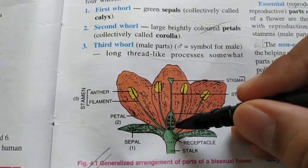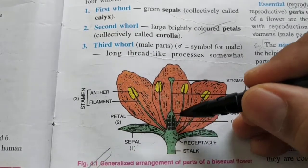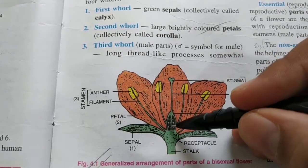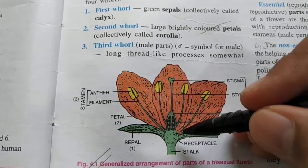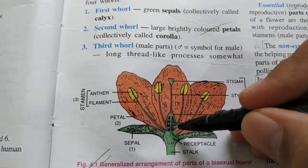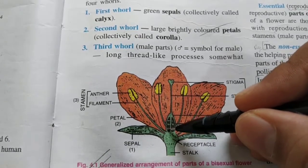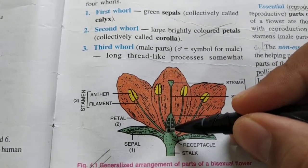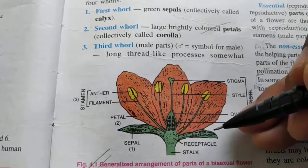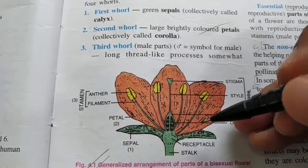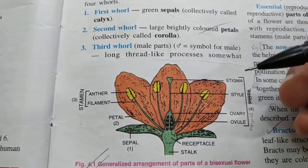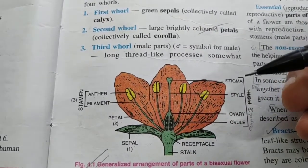When the fruit or seed falls on the ground and the seeds germinate in the presence of soil, temperature, and oxygen, the embryo inside the seeds will grow into a new plant. We will study more about this in Chapter 6.